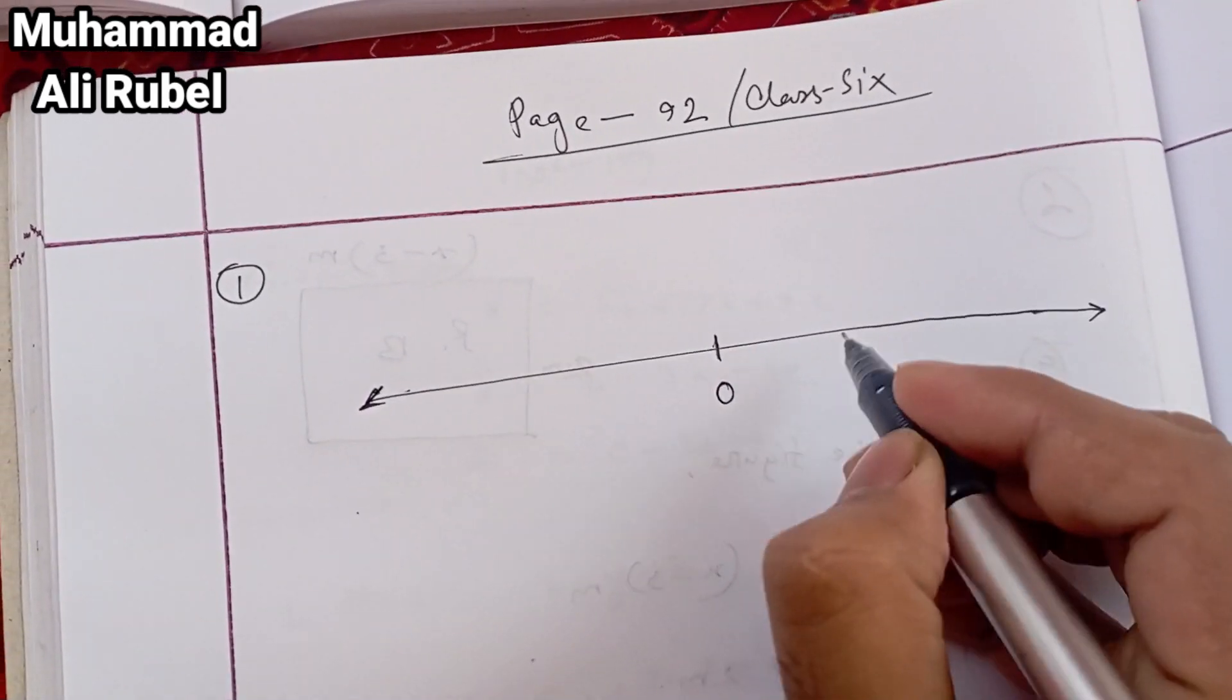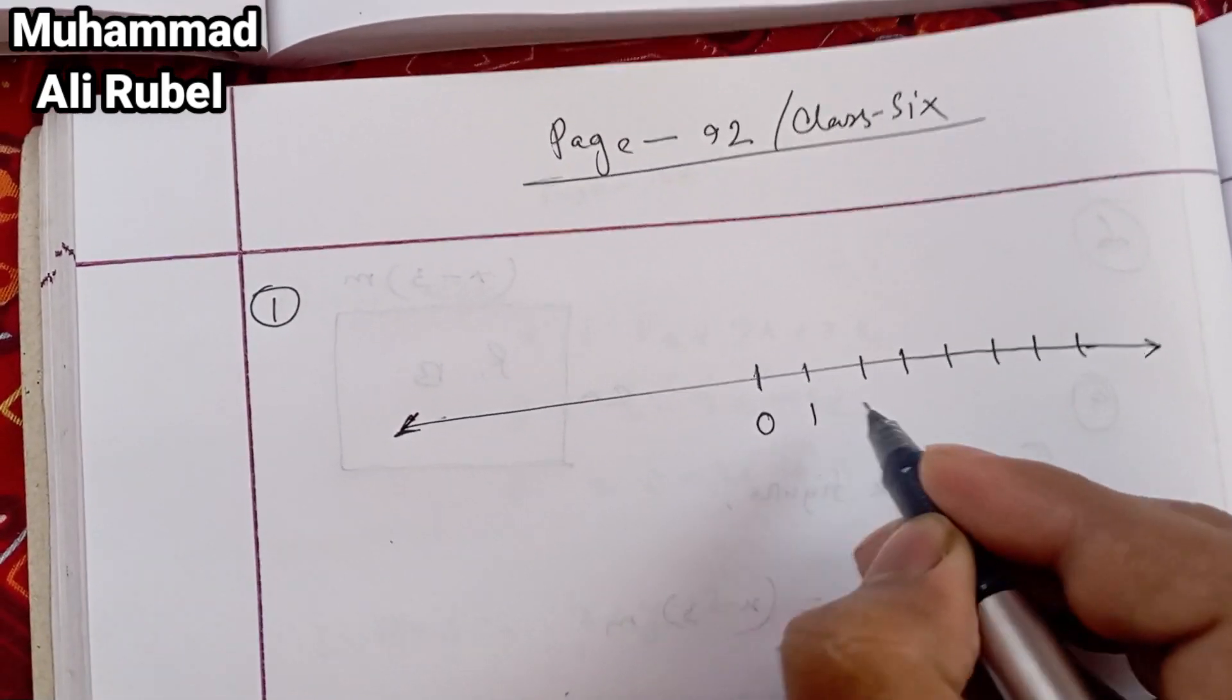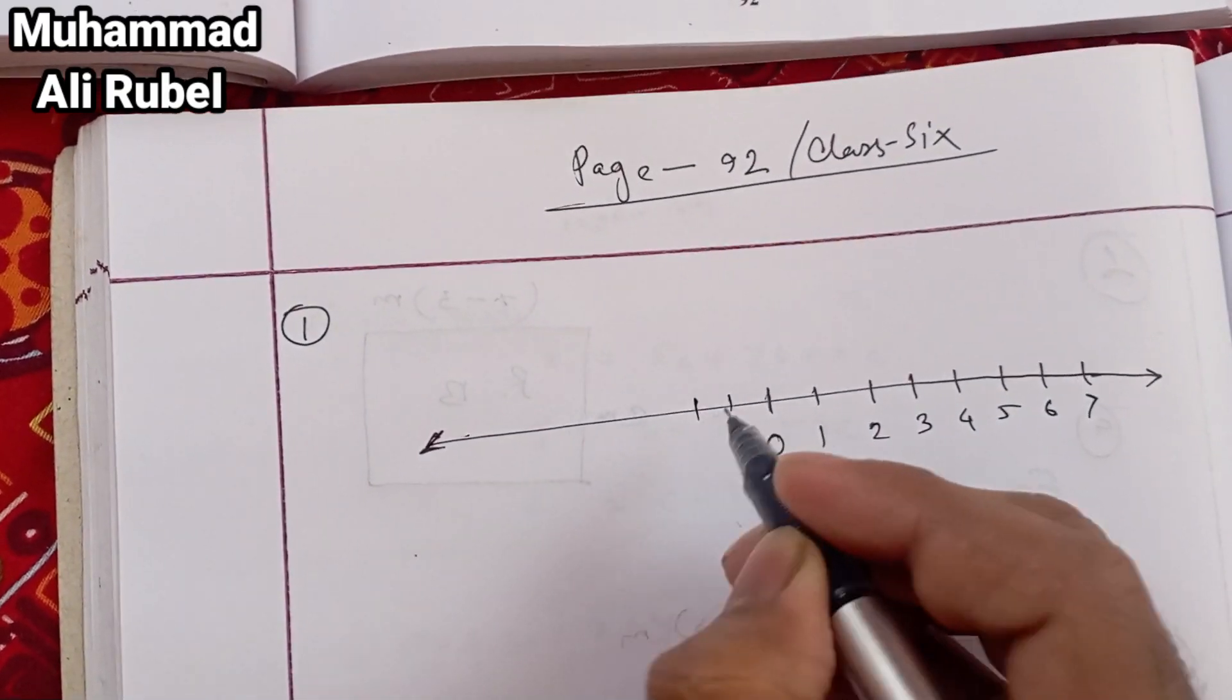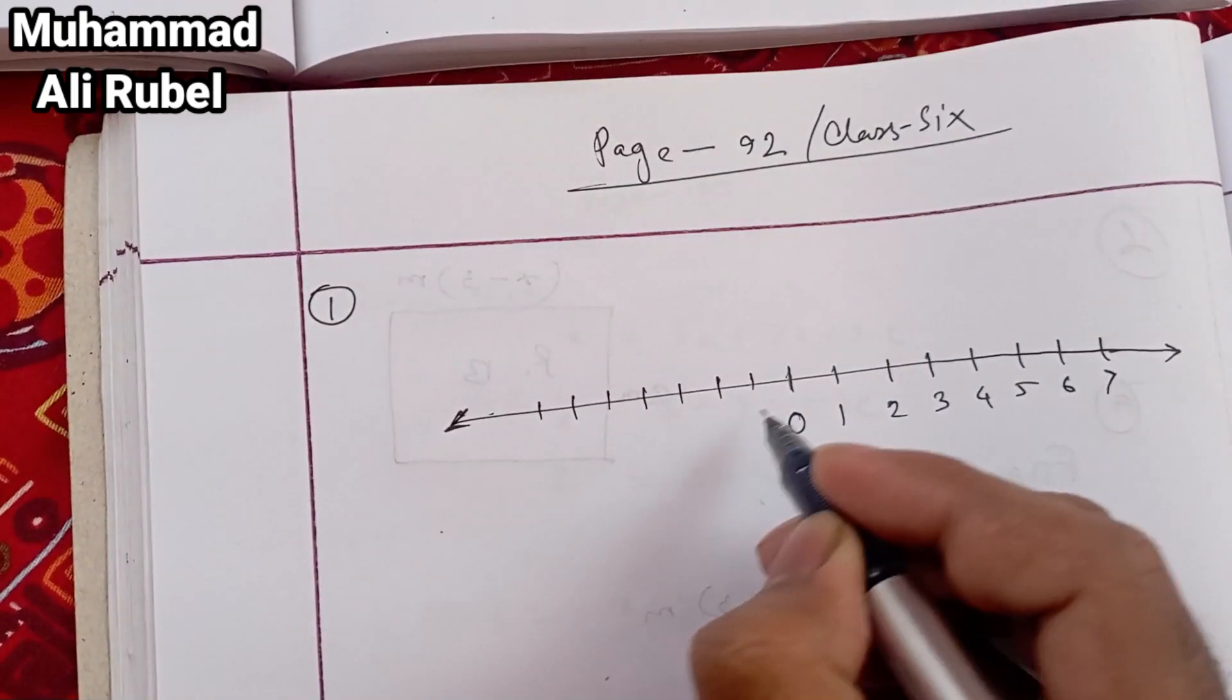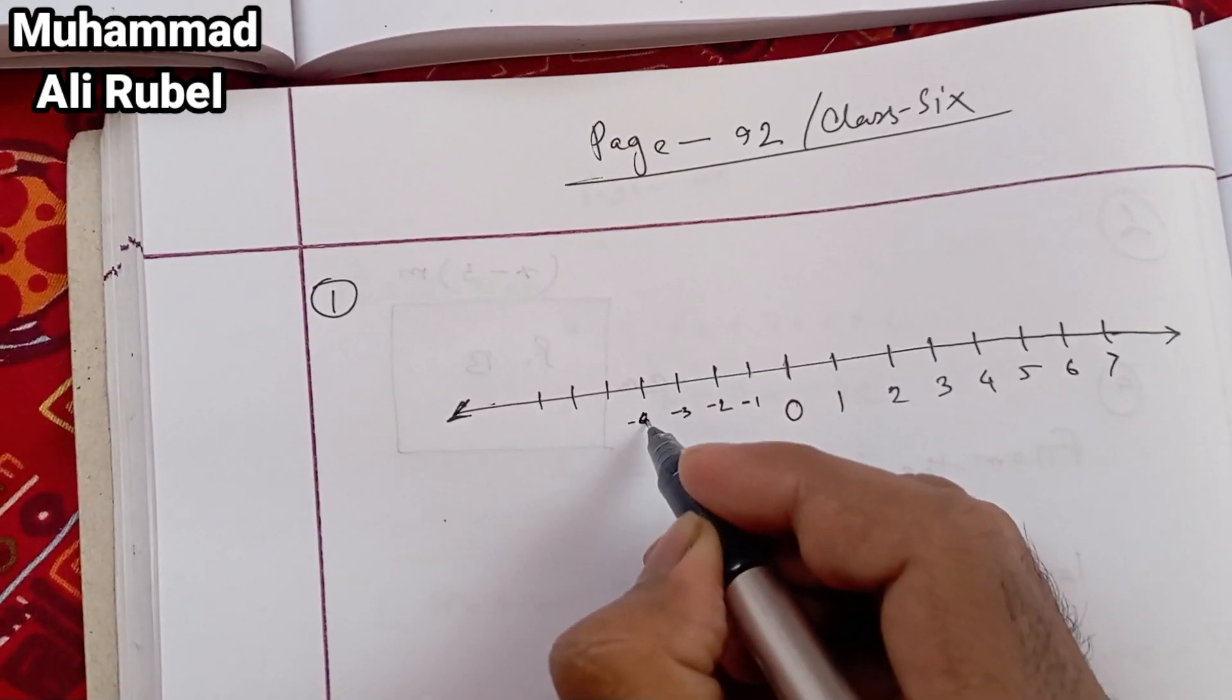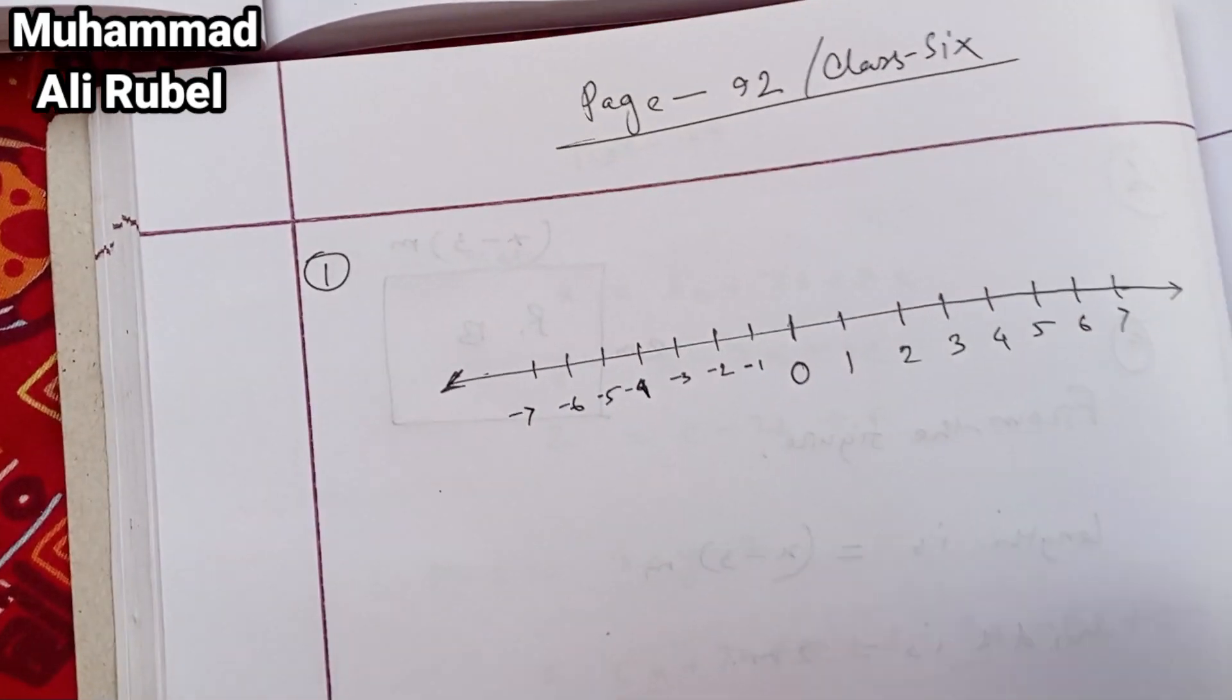Zero, one, two, three, four, five, six, seven. Minus one, minus two, minus three, minus four, minus five, minus six, minus seven.